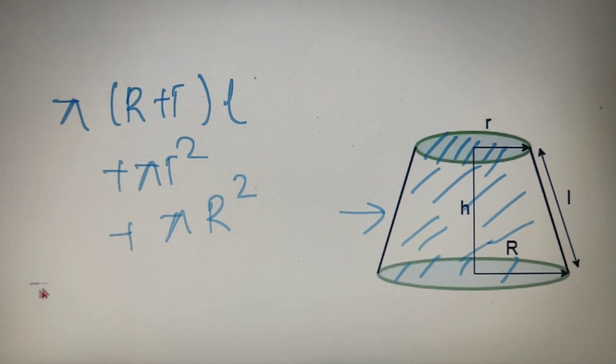So after taking pi as common we can represent the formula as pi times capital R plus small r into L plus R square plus capital R square. So the value of the total surface area of the frustum is equal to pi times R plus r L plus small r square plus capital R square.